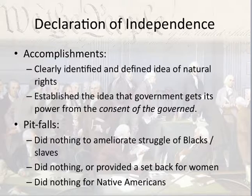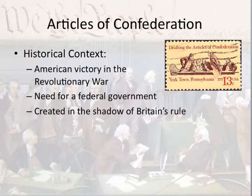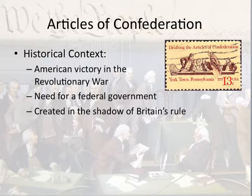Once independence is declared, we have a war. Once the war is over and America wins, we need to figure out what to do with regard to a government, and that's where the Articles of Confederation come in. The historical context is the American Revolution, the colonial victory in the war, and the need to establish a new government. Just a disclaimer: the Articles of Confederation were actually set up before the war ended — they were the government that actually got the colonists through the war.